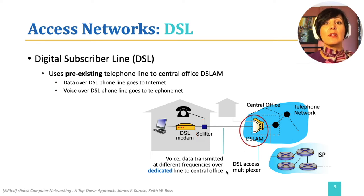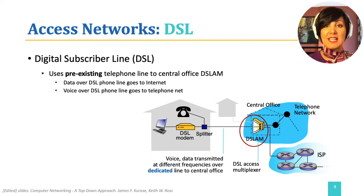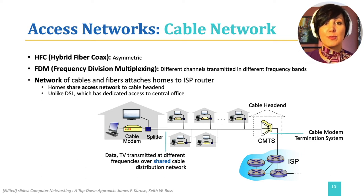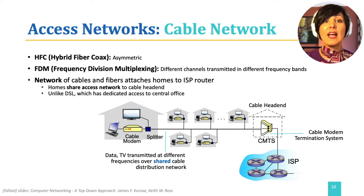The digital subscriber line access multiplexer, DSLAM, sitting in the telco's local central office, translates those analog signals from many such homes into digital format and back. While DSL makes use of pre-existing telephone infrastructure, cable access makes use of cable TV pre-existing infrastructure to provide internet access. In the cable network, fiber networks provide connection to each neighborhood, from where homes receive access through coaxial cable. The system is therefore referred to as hybrid fiber-coax, or HFC.